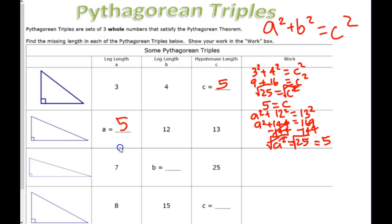Now, that's 5. This time, it's a leg instead of the hypotenuse. So, here's our other Pythagorean triple. 5, 12, 13.